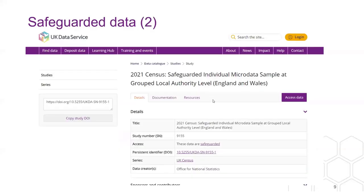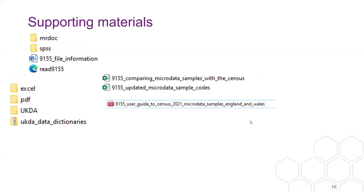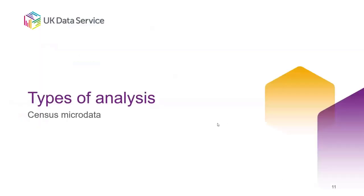Going back to the slides and running through those very quickly — this is what the file structure looks like underneath. You can see there's documentation. I've gone for the SPSS version; there's also a Stata version and some kind of tabulated version. You can get at the documentation around the data dictionaries.